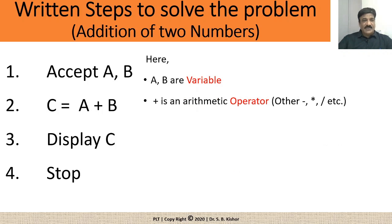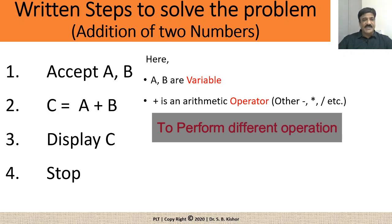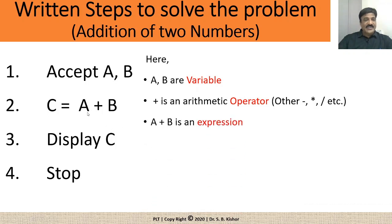Now, here plus is what? Plus is an operator. It is an arithmetic operator symbol. So, you may use minus, multiplication or division etcetera. Then, what is A plus B? It is called as an expression. This part is referred as the expression and in this case, this expression consists of only two parts and hence it is called as binary operation. Where the A is one of the operand while B is the another operand.